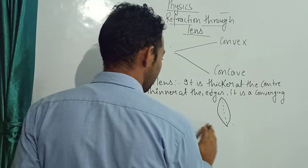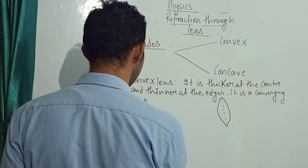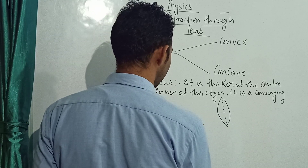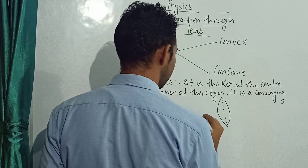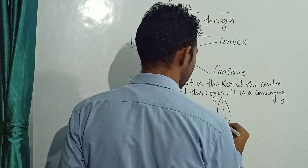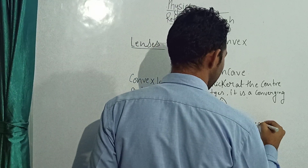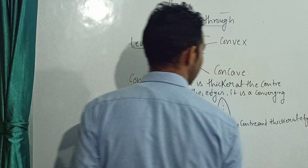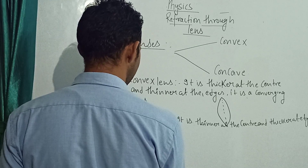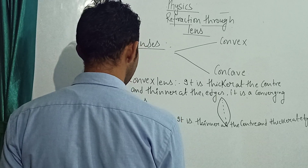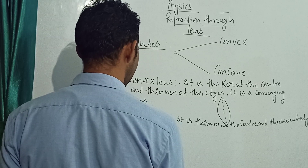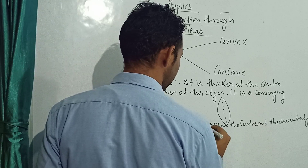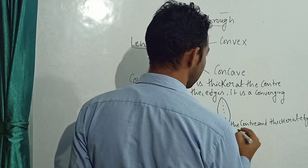Now we will write the next one, that is your concave lens. The concave lens is just opposite of the convex lens. It is thinner at the center and thicker at the edges. It is a diverging lens.